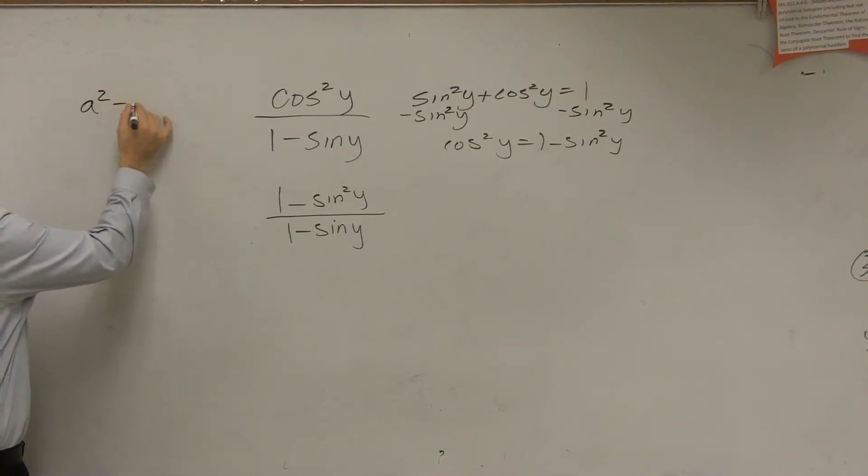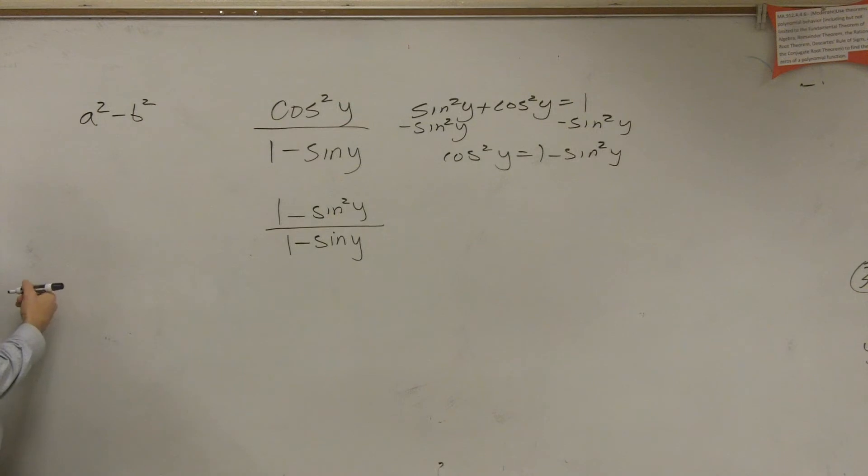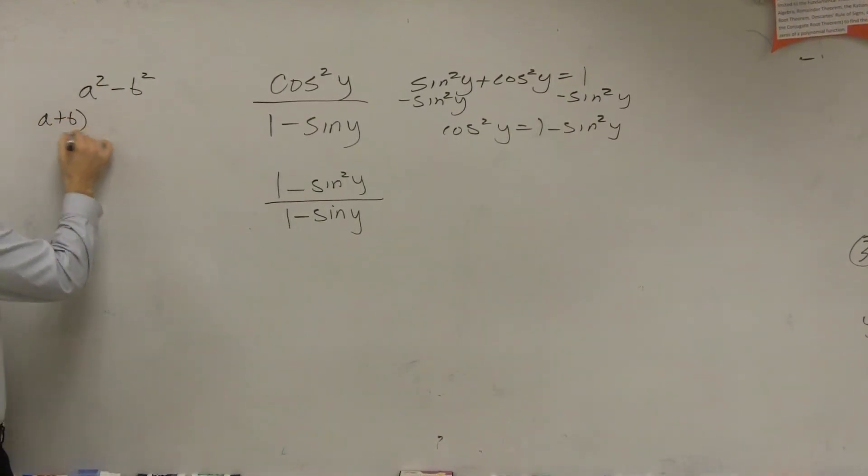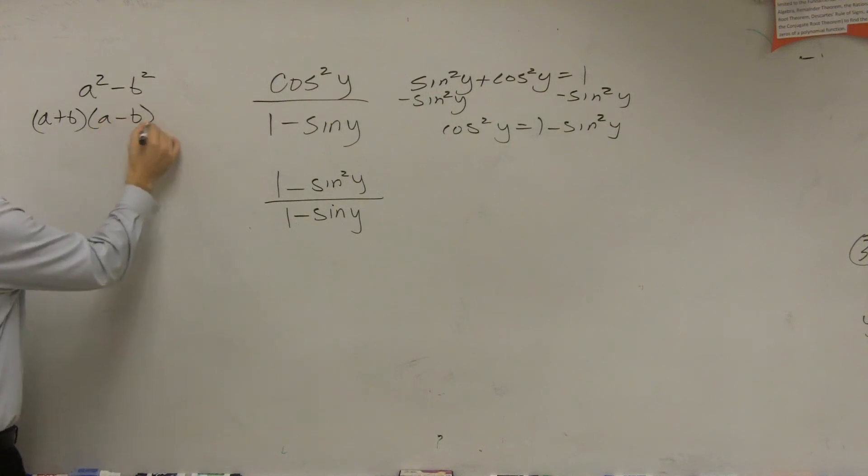Let's go back if you guys remember this form: a squared minus b squared. You guys remember this? And this is a plus b times a minus b. That was a difference of two squares. Is this a difference of two squares? Is my first term a square number? And is my second term a square number?